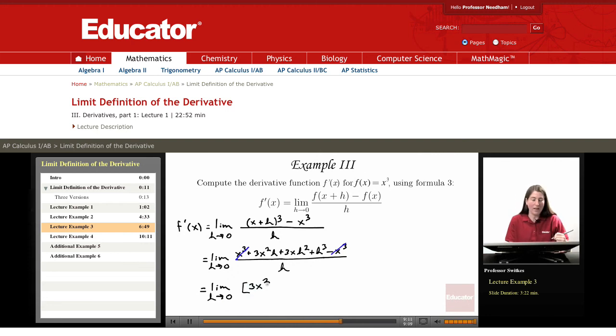3 x h squared over h becomes 3 x h. And then h cubed over h simplifies to h squared.